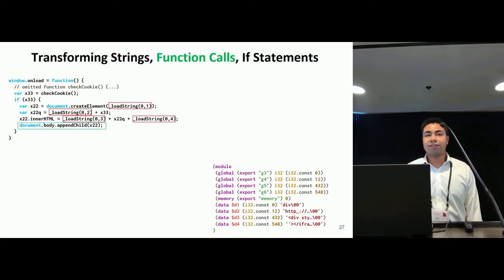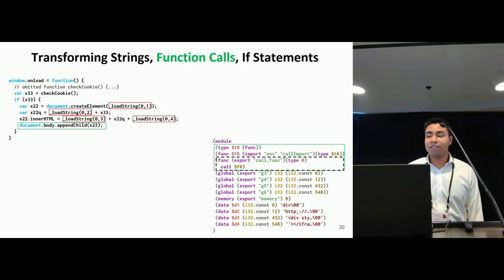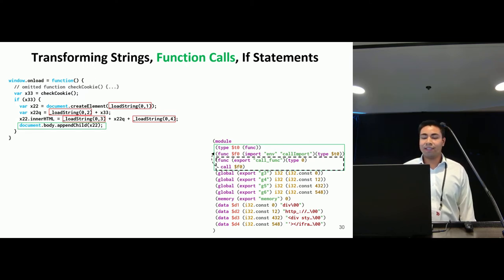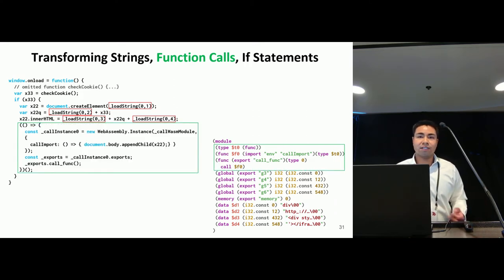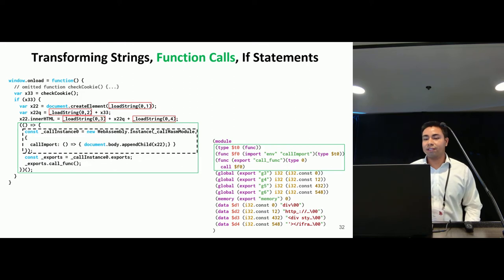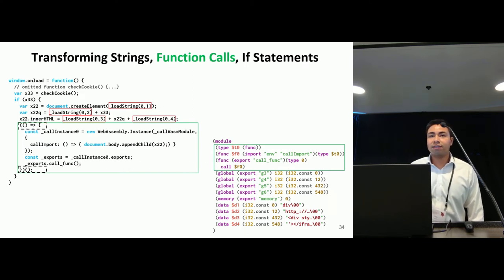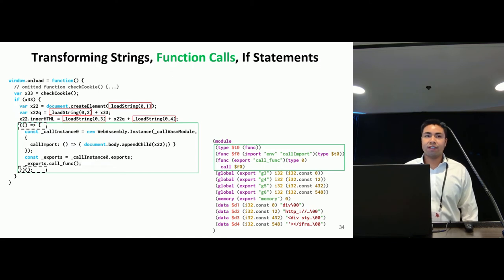Next, WafiSkater moves the original function call of appendChild into an imported function, callimport. In the WebAssembly module, we also define an export function, callfunc, that simply calls this callimport. On the JavaScript side, we replace the original function call site with an anonymous function block that does three things: it instantiates the WebAssembly module with an import object containing the original call to appendChild, it calls the exported WebAssembly function callfunc, and it invokes the anonymous function wrapper that wraps everything to trigger execution.